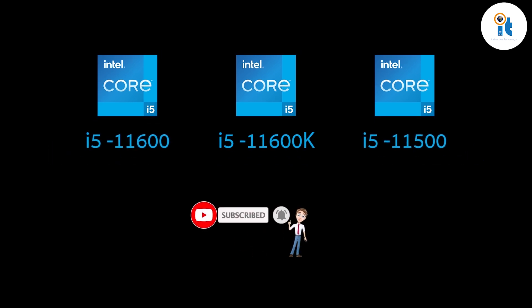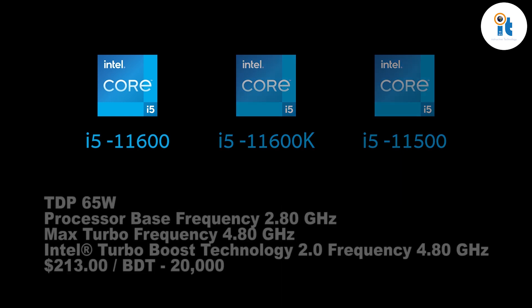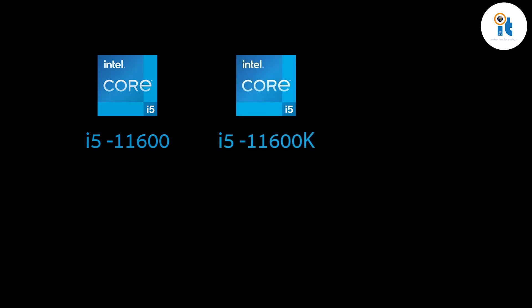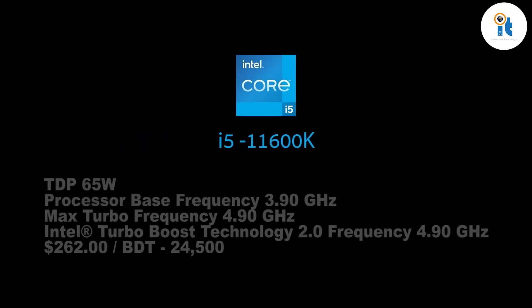Intel Core i5-11600 processor: TDP 65 watt, processor base frequency 2.80 GHz, max turbo frequency 4.80 GHz, Intel Turbo Boost Technology 2.0 frequency 4.80 GHz. Price: approximately $262.